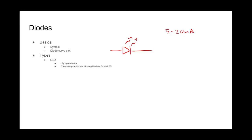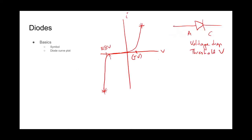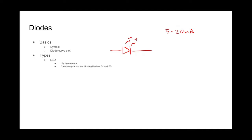As long as you're within this range or close to it, you're fine. But in order to limit that current — because once you pass that threshold voltage, the amount of current allowed to flow is uninhibited — we need something to limit that. Typically that's done with a current limiting resistor either behind or in front of the diode. There are different reasons to do it, but let's talk about how to calculate that.